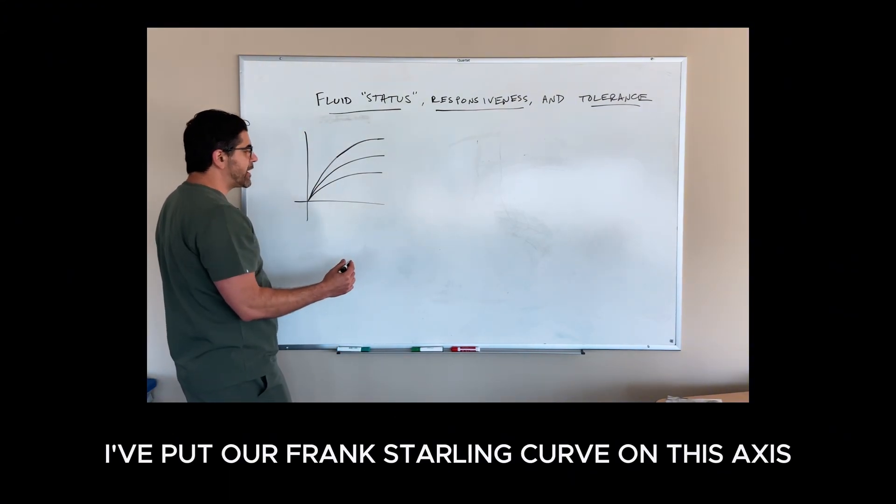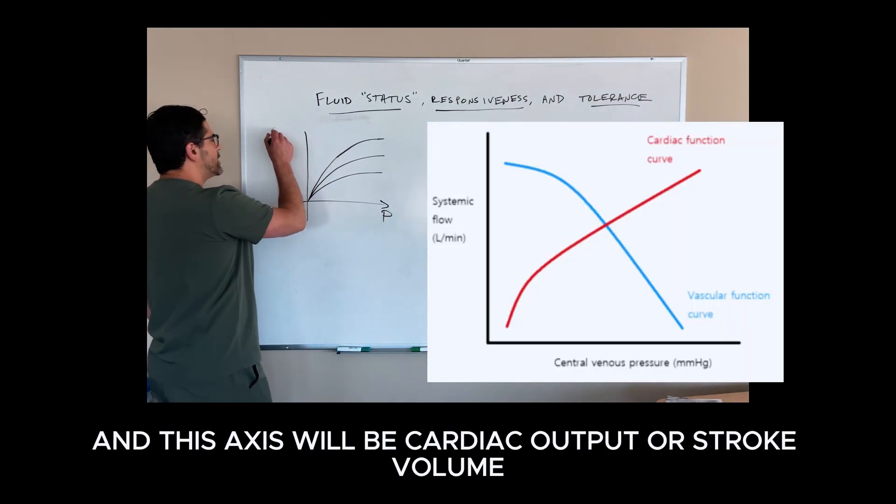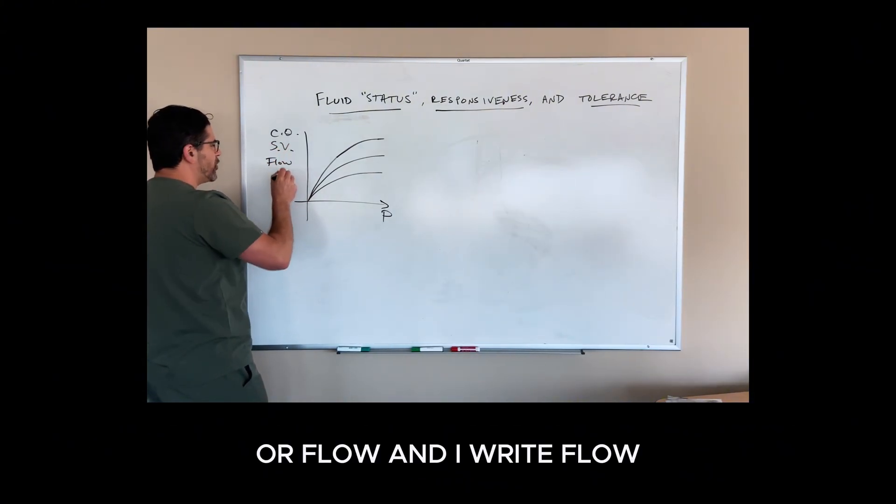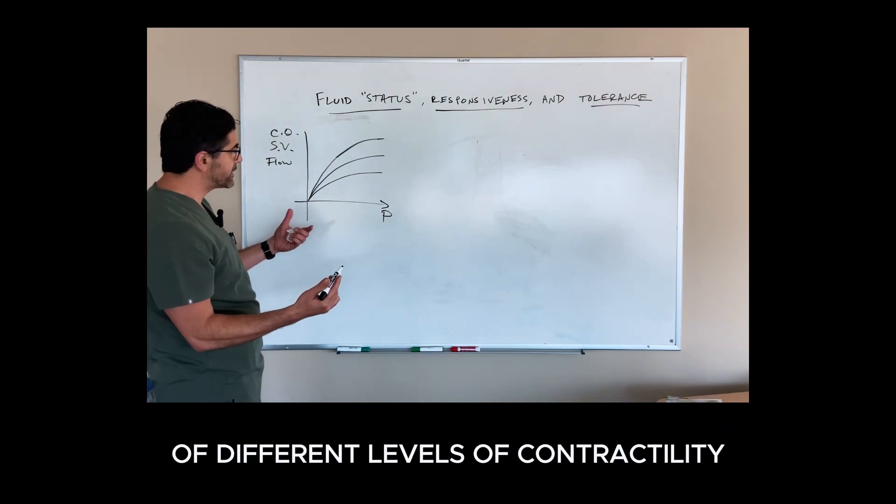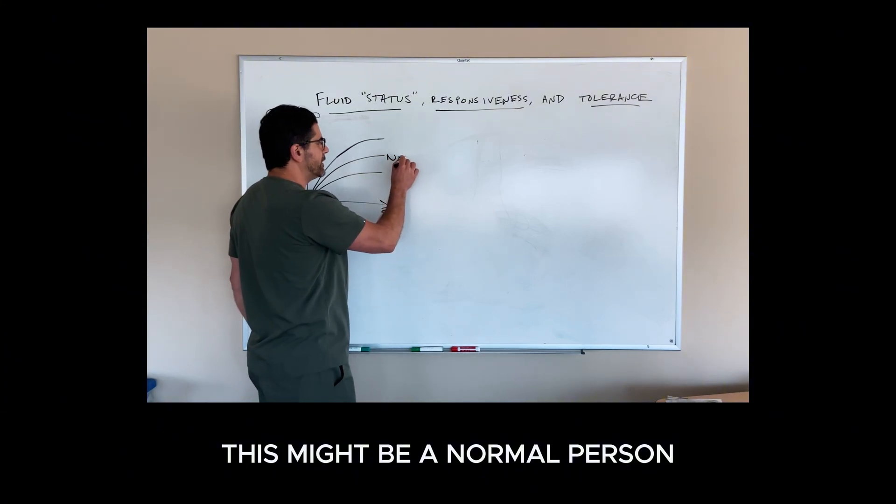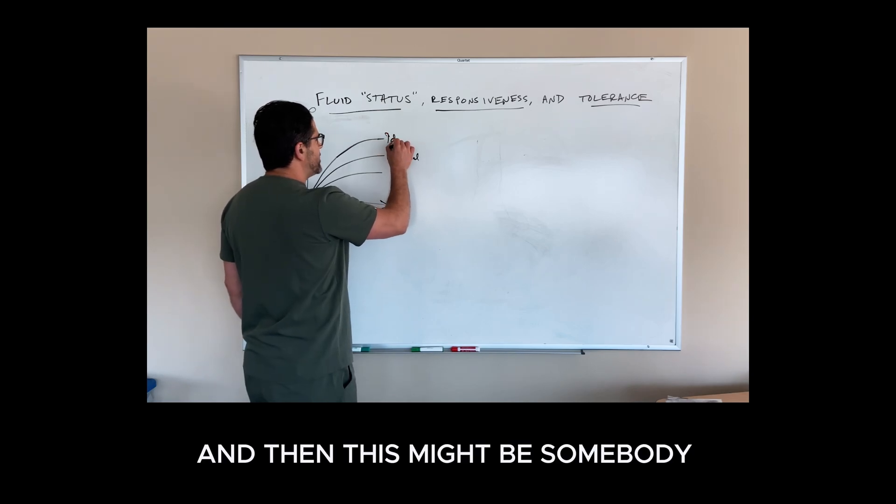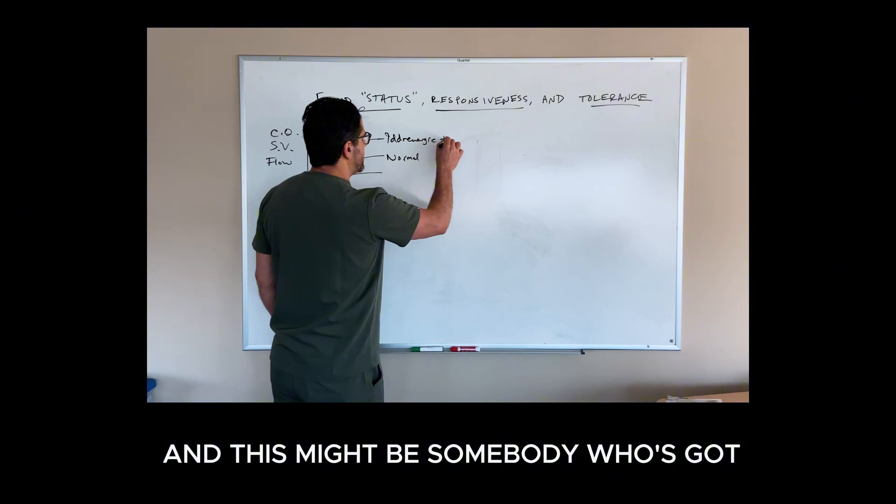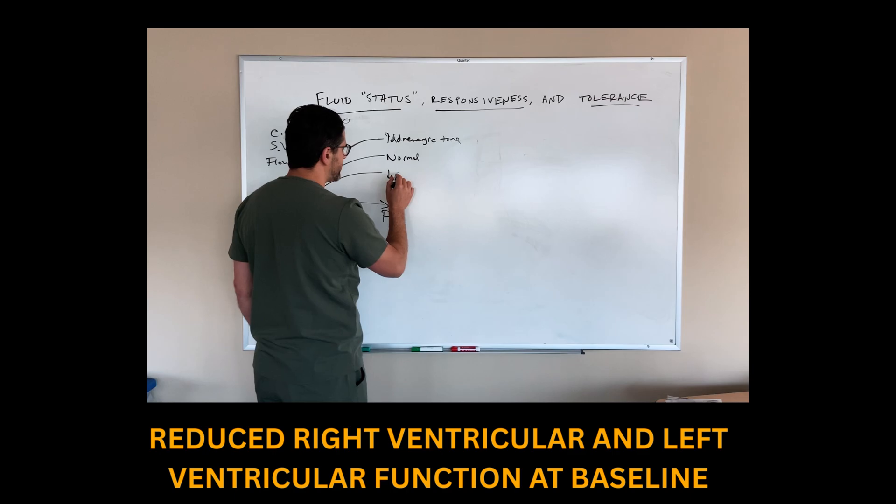When you think about fluid responsiveness, you're asking yourself, when I expand intravenous volume and pressure, am I going to get a significant augmentation in my cardiac output? Over here, I've put our Frank-Starling curves. On this axis is pressure. This axis will be cardiac output or stroke volume or flow. These are several different Frank-Starling curves with different levels of contractility. This might be a normal person. This might be somebody who has high adrenergic tone because they're sick with something. And this might be somebody with reduced right ventricular or left ventricular function at baseline, cardiomyopathy of some sort.